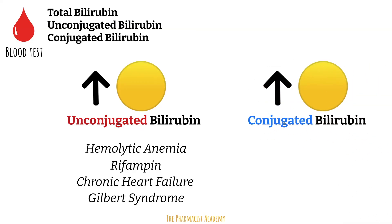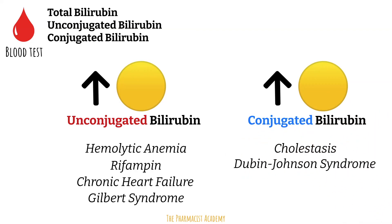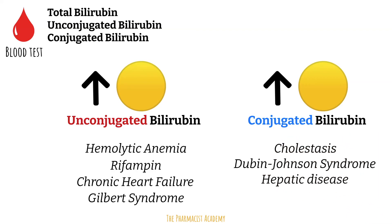Elevated conjugated bilirubin may be due to obstruction of the biliary flow into the intestines, which will lead to accumulation of conjugated bilirubin within the hepatocytes. This is also known as extrahepatic cholestasis, and it's important to distinguish this from intrahepatic cholestasis, which prevents the conjugated bilirubin from being moved into the bile. This is seen in Dubin-Johnson syndrome. Lastly, when there's hepatocellular injury and the liver can't make bile, it will cause an elevation of conjugated bilirubin in the blood because the bile is not there for it to be released into.